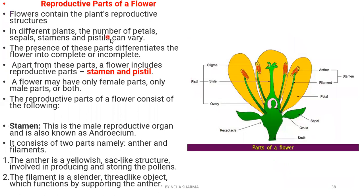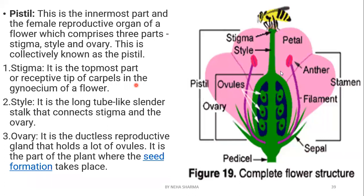The reproductive parts of the flower: the male part is the stamen, which consists of a filament and an anther. The anther stores pollen grains. The female part is the pistil, which has three parts: stigma, style, and ovary. The stigma is the sticky top part where butterflies and insects deposit pollen. The stigma, style, and ovary together help in reproduction. Flowers can be bisexual - having both male and female parts (for example mustard and china rose) - or unisexual - having only one sex (for example papaya and watermelon).